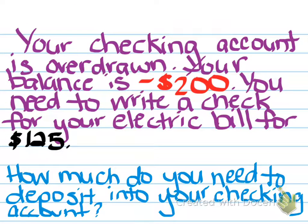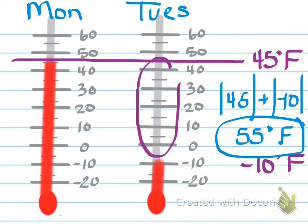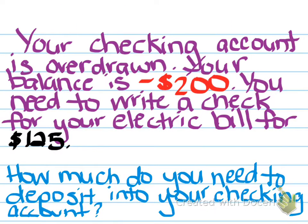Our last example is about a checking account — money. Those were the three things we talked about: elevation, temperature, and money. We've already covered the number line when we did the coordinate plane. So, your checking account is overdrawn. Your balance is negative $200. When I say it's overdrawn, that means you owe the bank money — you spent more than you had.